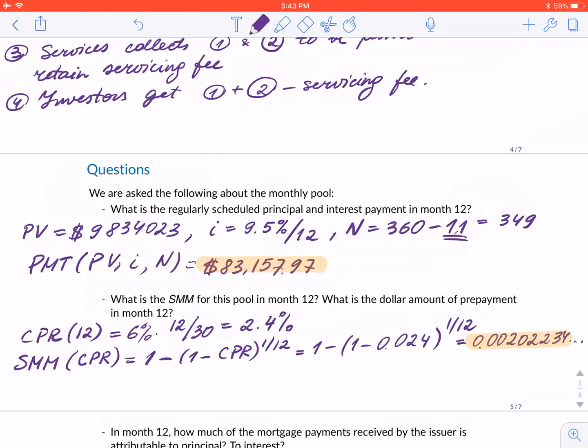Next we compute the dollar amount. The dollar amount is the single month mortality rate times the pool balance: 0.00202234 × $9,834,023 = $19,887.73. If the dispersion is within a dollar, it's totally fine.